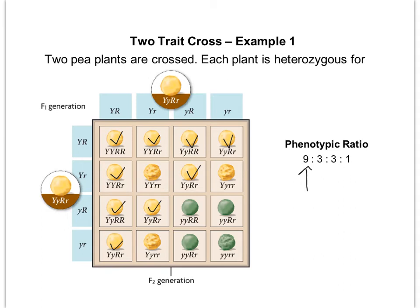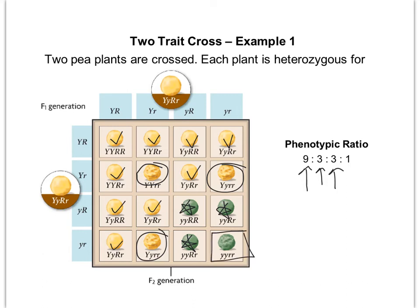Then let's look at the dominant of one trait — yellow, which is dominant for color — but with the recessive of the second trait, which would be wrinkled. There are one, two, three of those. Then looking at the other combination: the recessive color green with the dominant shape round — there are three that are green and round.